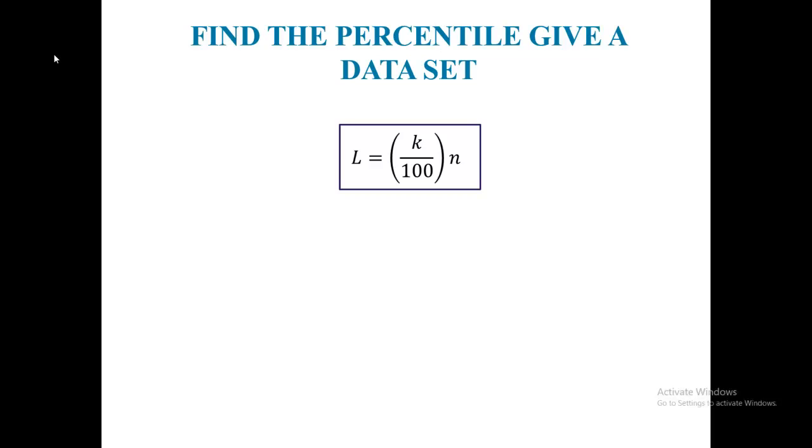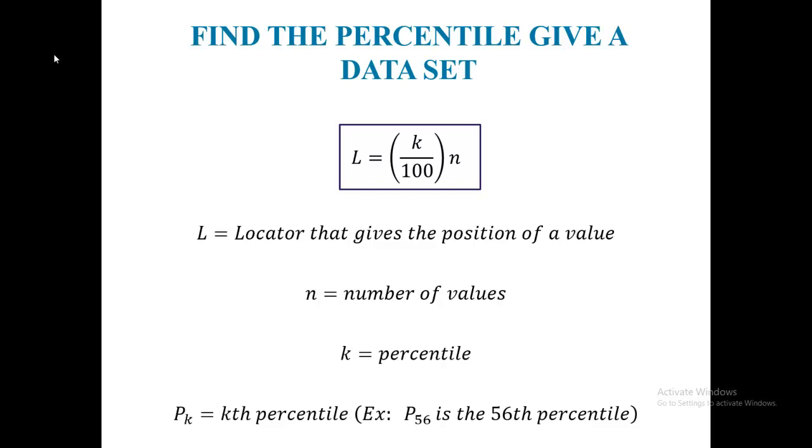In this session we'll find the percentile given a dataset. We'll use the formula L equals K divided by 100 times N. In this formula, L is the locator that gives the position of a value, N is the number of values, K is the percentile, and P sub K is the Kth percentile. For example, P sub 56 is the 56th percentile.